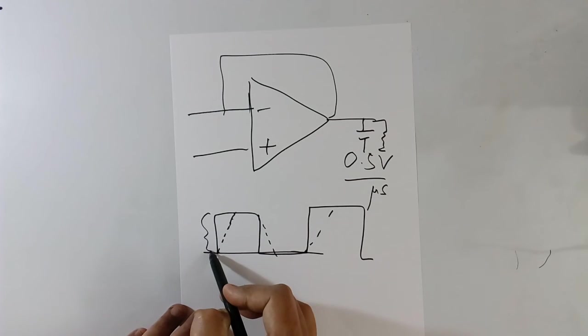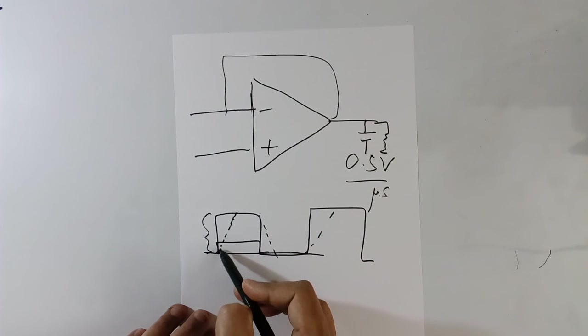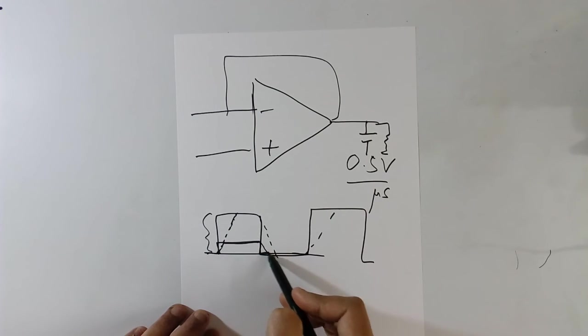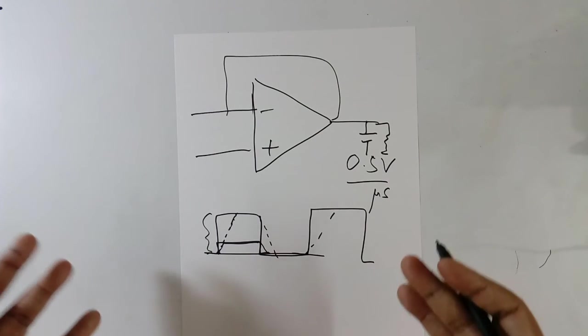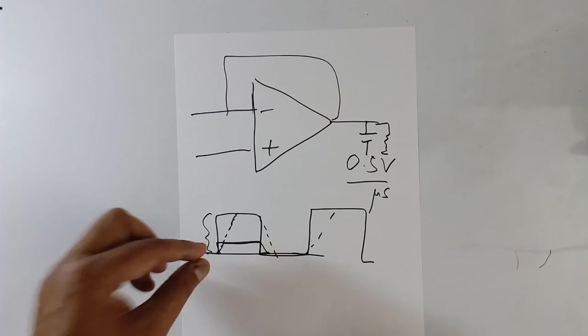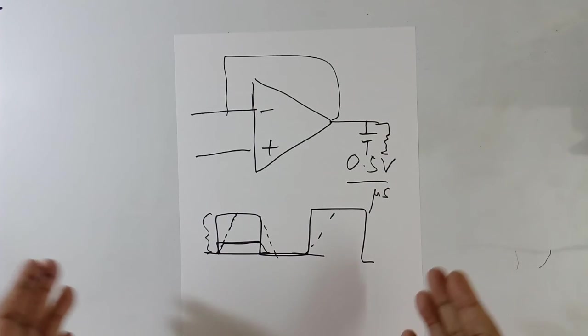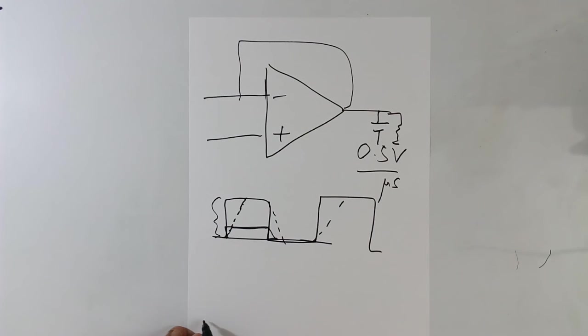Now here itself you see, instead of taking this much voltage, suppose your input is only this much. So you will get a better quality output. It is not becoming faster, it is looking faster because your signal is small. Small signal will give, or you have to reduce the frequency.